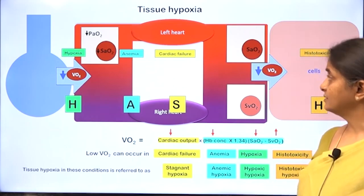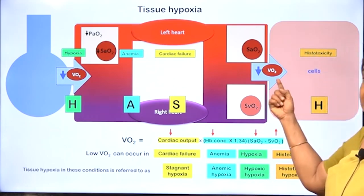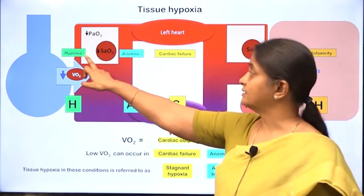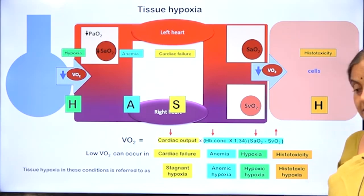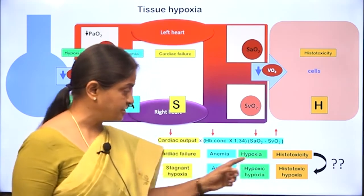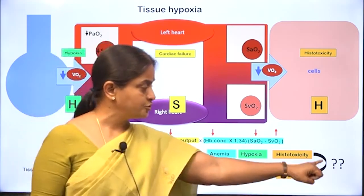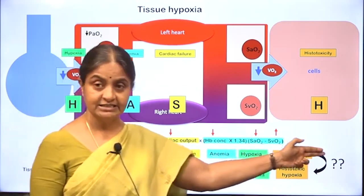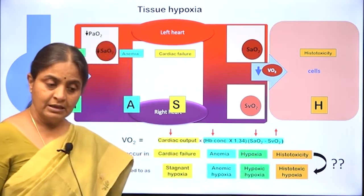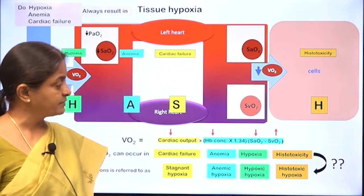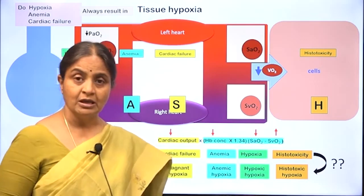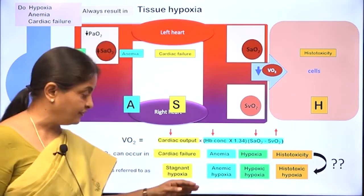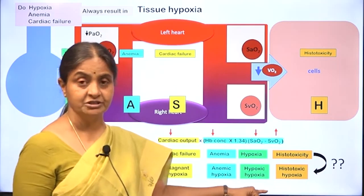To summarize: reduced oxygen consumption by cells can occur in hypoxia, anemia, cardiac failure, and cell injury or tissue toxicity. However, tissue hypoxia does not necessarily occur in all these conditions — it develops only when the compensatory mechanisms in each condition are overwhelmed, leading to a definitive reduction in oxygen consumed.